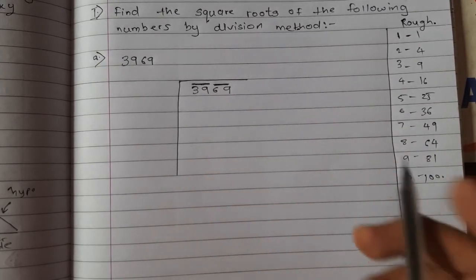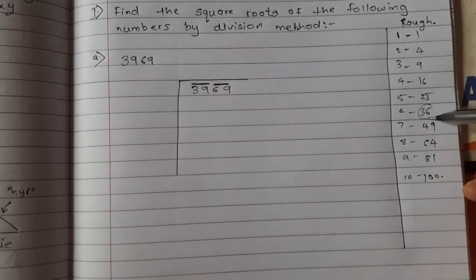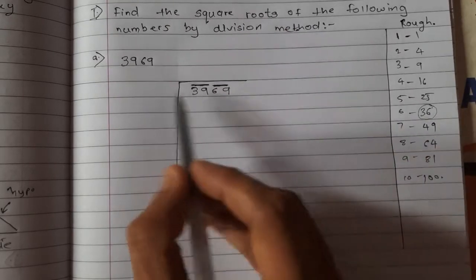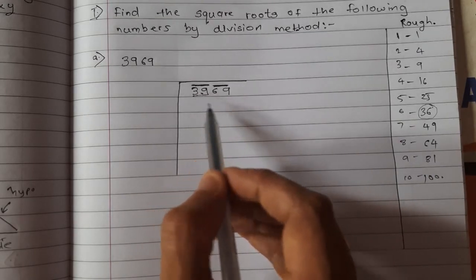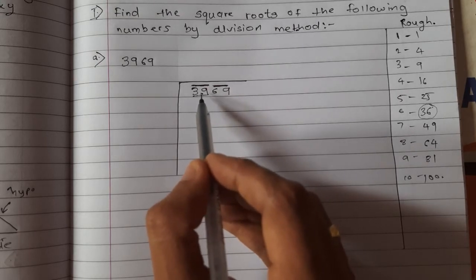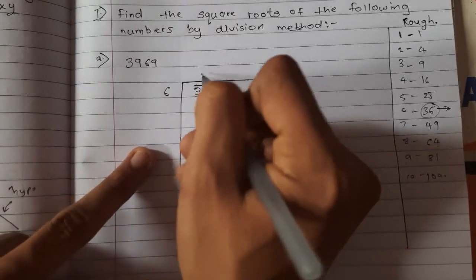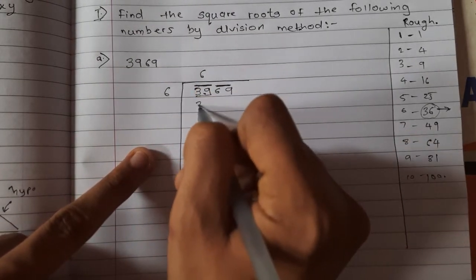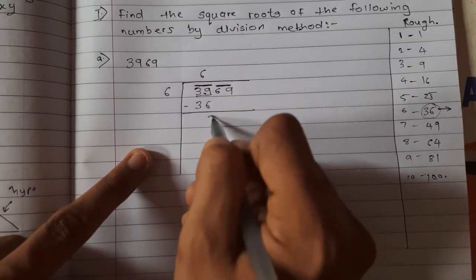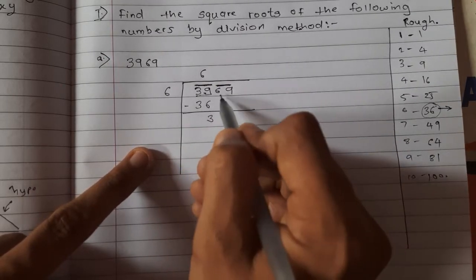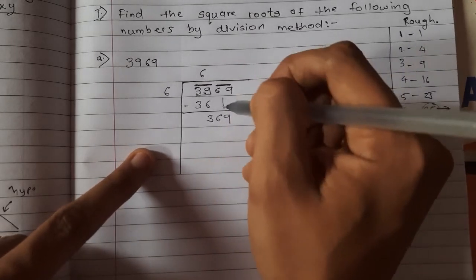See which is the perfect square nearest to 39. The nearest perfect square less than 39 is 36. So you will write 6 × 6 = 36 and draw a line, then subtract: 39 − 36 = 3. Then bring down the next group 69.